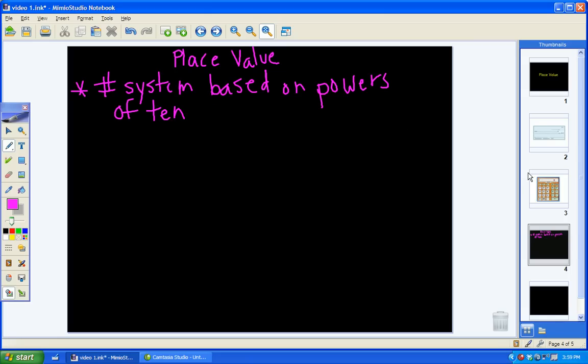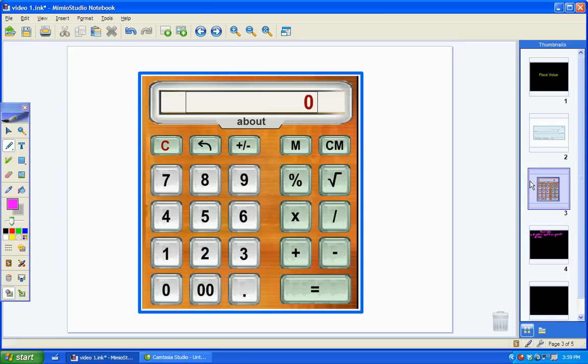So you can see this happen on a calculator. I'm going to switch over to a calculator. If I start with the number 1, and I multiply by 10, watch what happens to my 1. It grew from just being 1 to a 10. Now watch when I multiply by 10 again. It turns into a 100. Multiply by 10 again. It turns into a 1,000.